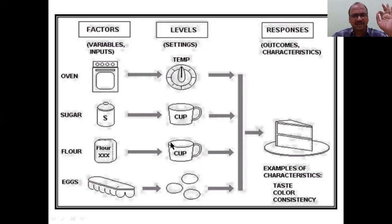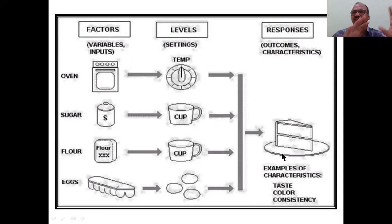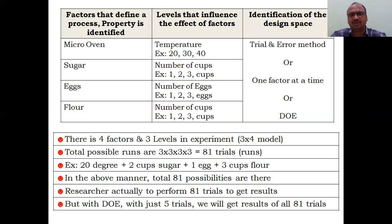Each factor has different levels: for temperature, 20, 30, 40, 50 degrees; for sugar, one cup, two cups, three cups. The number of levels depends on each factor. The responses — taste, color, consistency — are automatically influenced by the factors and levels you set. You can adjust the factor levels to increase or decrease the response. This demonstrates the power of Design of Experiments.